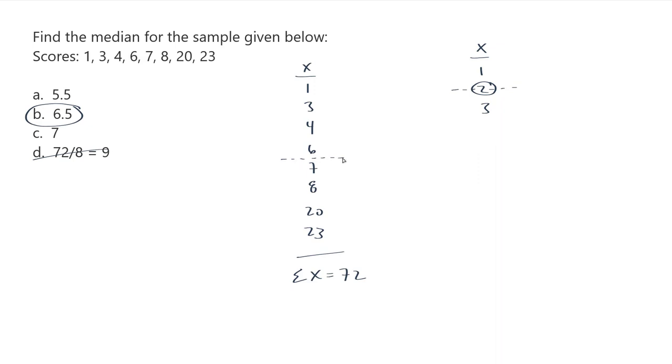If this median point doesn't happen right at a number, then what you do is you take the average of the two numbers that surround it. So I need 6 plus 7 divided by 2, this gives me 6.5.